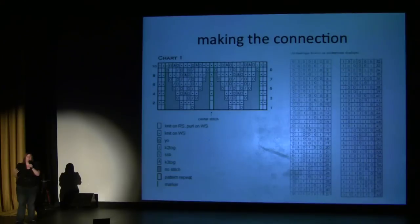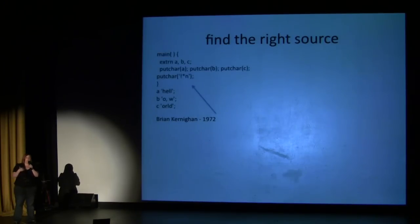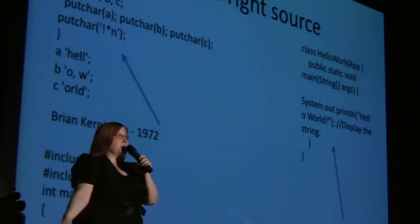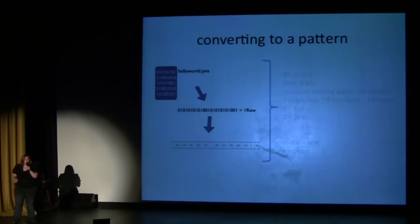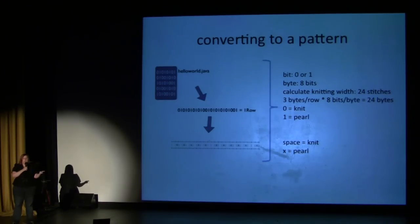I could totally take some code, convert it into binary, and create a pattern and knit it. Yes, I do this in my free time. So, first you have to find the right source. In my case, I decided to go with the Hello World app — it seemed like it was one of the first apps ever written, so maybe it should be my first foray into binary knitting. I actually have the original Hello World app from 1972, one in C++, Java, and Perl. I ended up choosing Android because it's sort of the new cool hotness in the developer space. What you do is take your code, convert it to binary, decide how many stitches across you want your pattern to be, and then convert the zeros into knit stitches and ones into purl stitches.